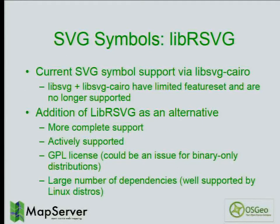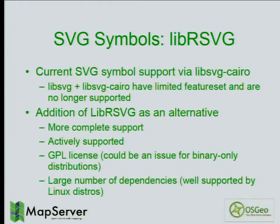Regarding SVG symbology: in 6.2 we added SVG support using libsvg with libsvg-cairo, but that component was limited in features and is being abandoned. It hasn't been removed in 6.4 but is limited. What's been added in 6.4 is support for lib-rsvg, which has more complete SVG symbol support. One thing to be aware of: it uses a GPL license, so if you compile MapServer with it, everything you build becomes GPL. Those packaging binaries need to be aware of this.